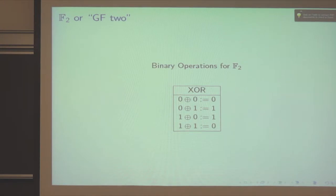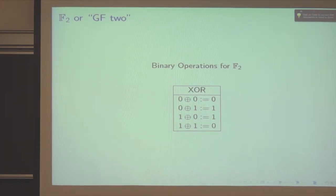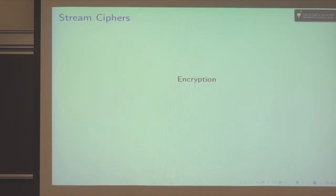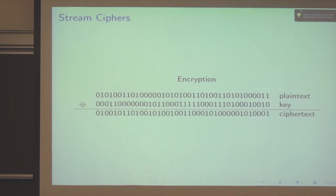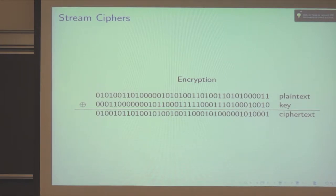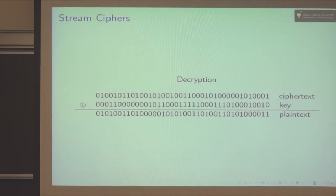Before getting into an example, I'll introduce what XOR means. In the finite field of two elements, also known as the Galois field GF(2), you have the elements 0 and 1. When you add in this field, if the elements don't match you get a 1; if they match you get a 0. In a stream cipher using GF(2), you have plaintext as bits of 0s and 1s, and a key which is another set of 0s and 1s. Wherever the key has a 1, the plaintext bit is flipped into ciphertext. Decryption uses the exact same key — apply it to the ciphertext and you recover the plaintext.